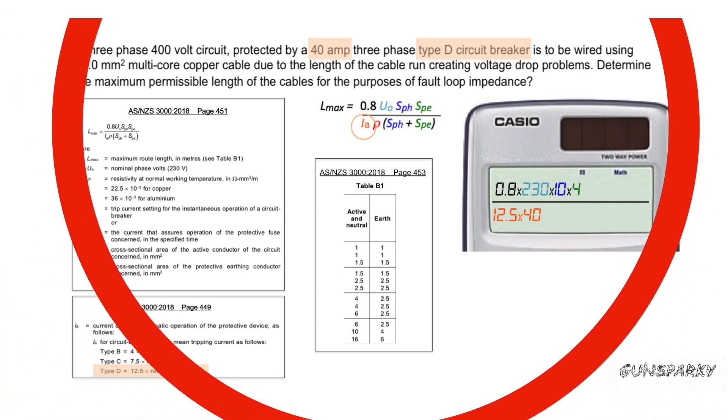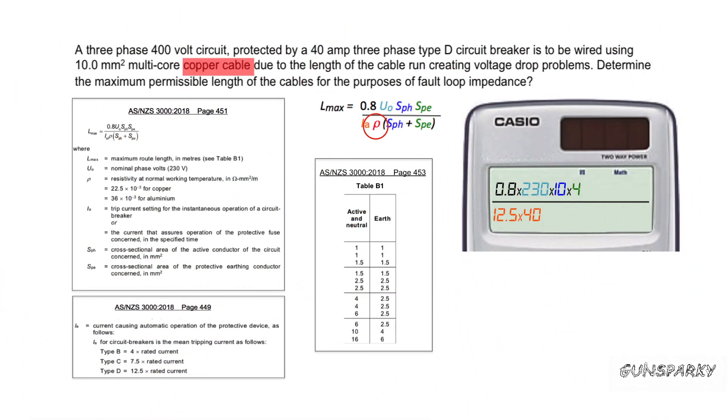In this scenario, we're using copper cable. Back to page 451 in your AS3000, the resistivity at normal working temperature for copper cable is 22.5 times 10 to the minus 3.